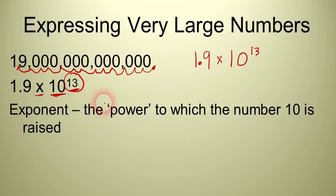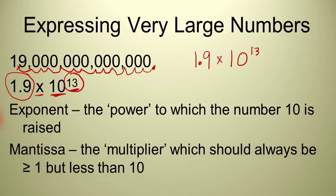We also have a number out in front. In this case, it's 1.9. That's going to be a number in between one and ten. We call that number the mantissa. It's that multiplier — sometimes it looks like a coefficient — that's always greater than or equal to one, but less than ten. So if a number is in correct scientific notation, the mantissa has to be in between one and ten. In this case, the mantissa is 1.9.